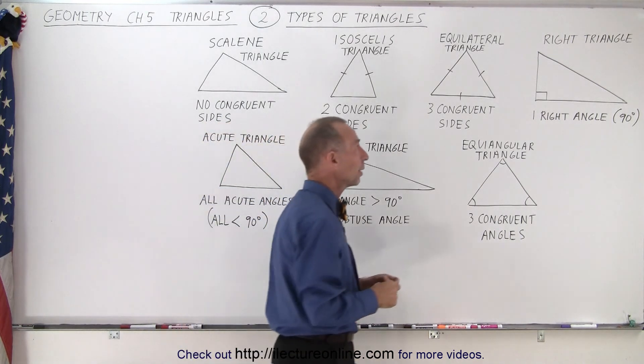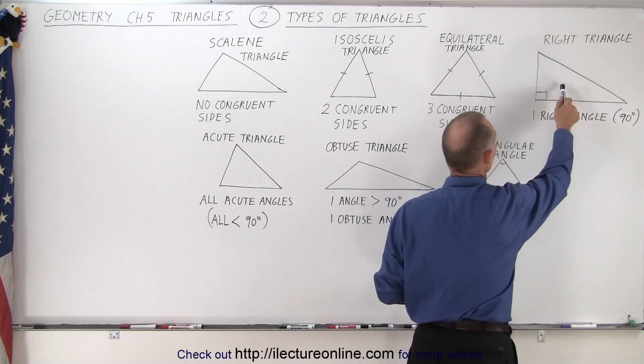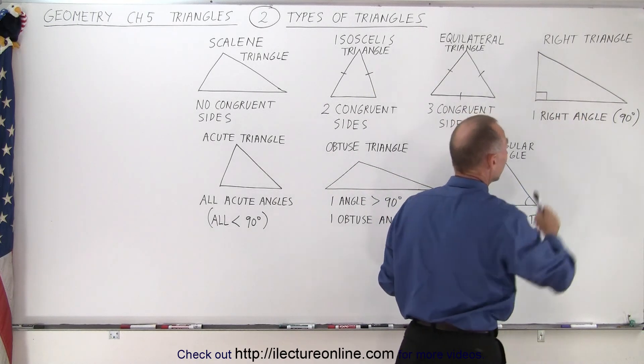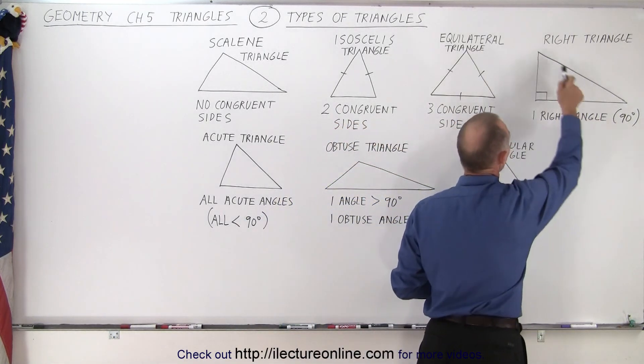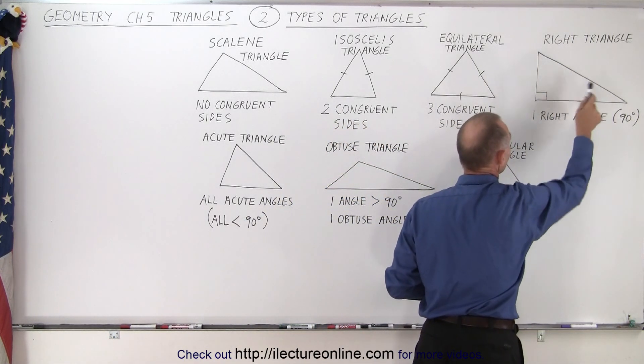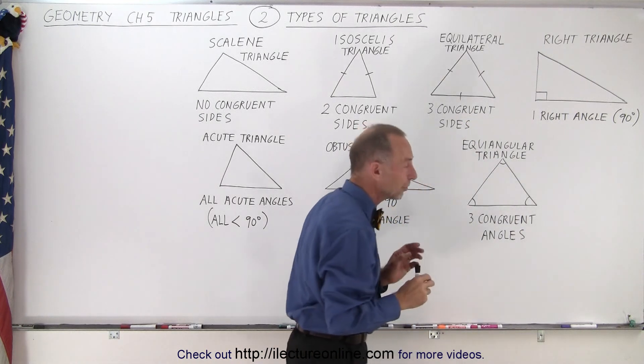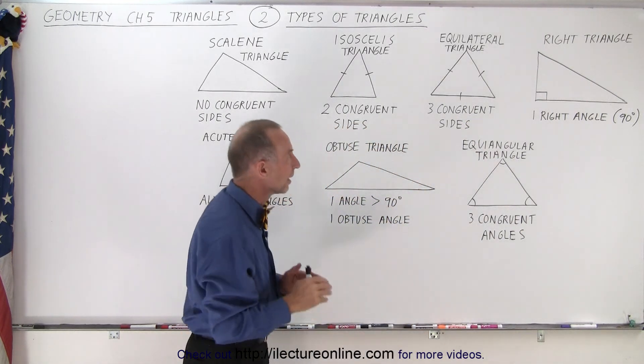Then we have one that we'll work a lot with which is called the right angle triangle or simply the right triangle because it has one right angle of 90 degrees. That means the other two angles have to have an angle of less than 90 degrees and so therefore that is called the right triangle.